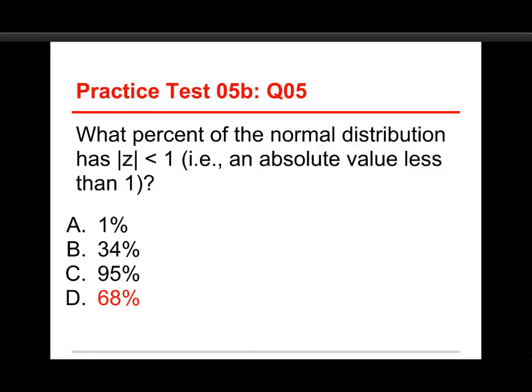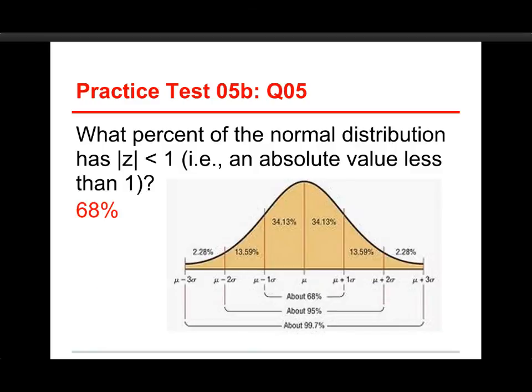Well, going back to our same thing, it's 68%. Again, let's take a quick look here. A z-score with an absolute value less than one, that means you can go down the left to negative one, and up to the right to positive one, and anything in between there has an absolute value of less than one. And what you see here is it's 34% on the left, 34% on the right, and together that makes 68%. And that's the answer to the last question in the second practice test for Chapter 5. See you at the third one.